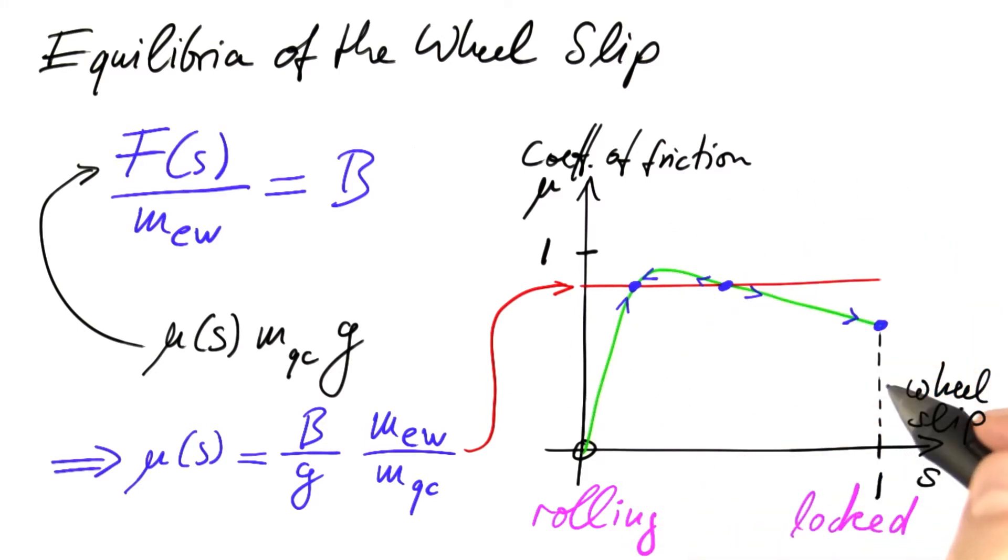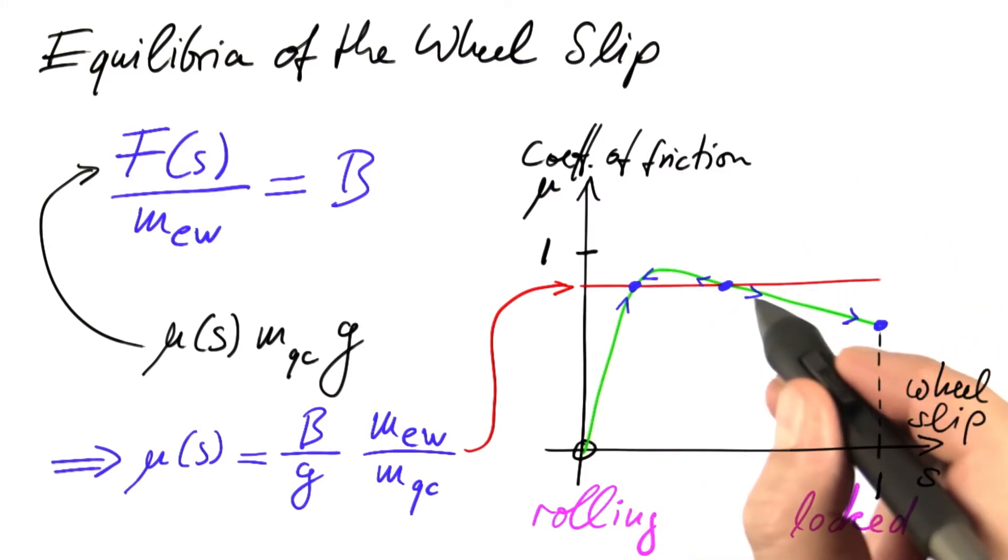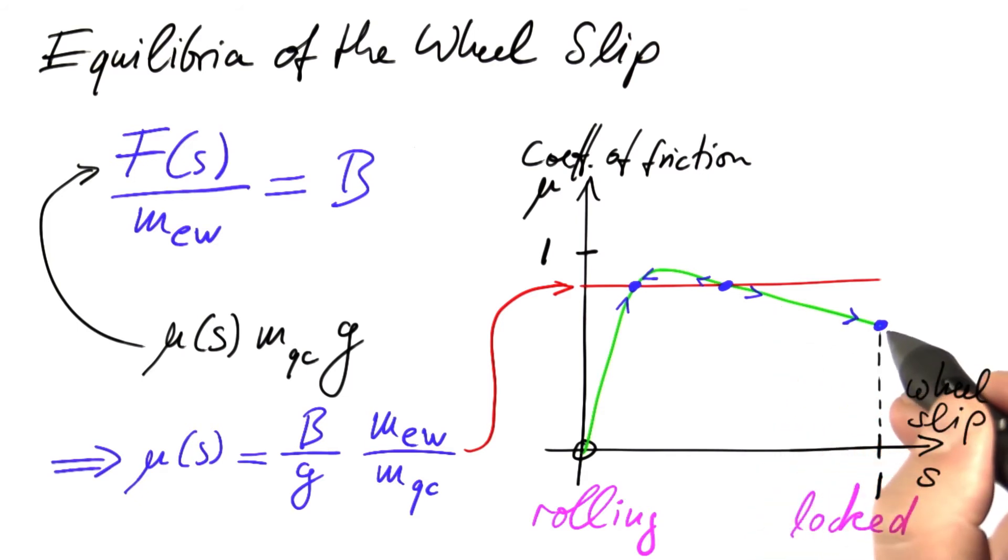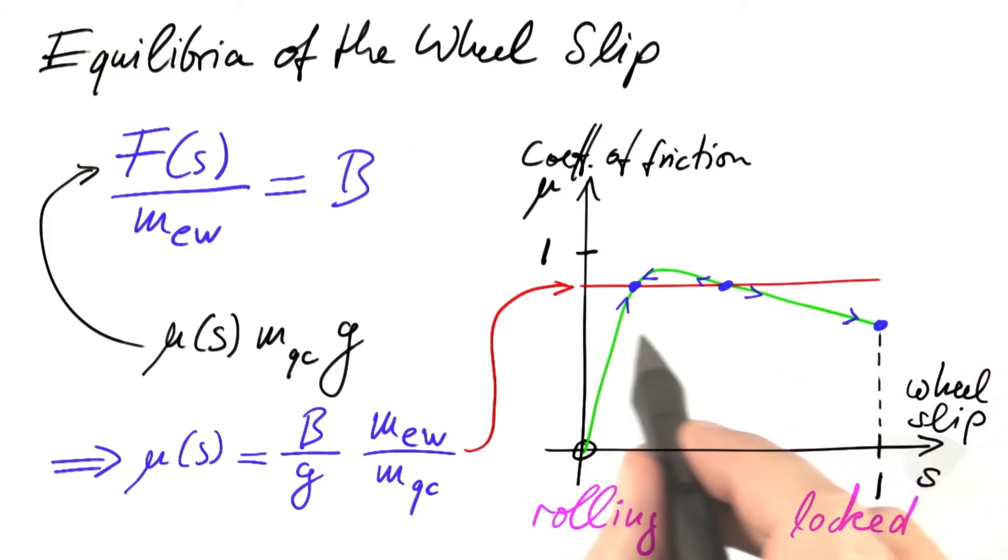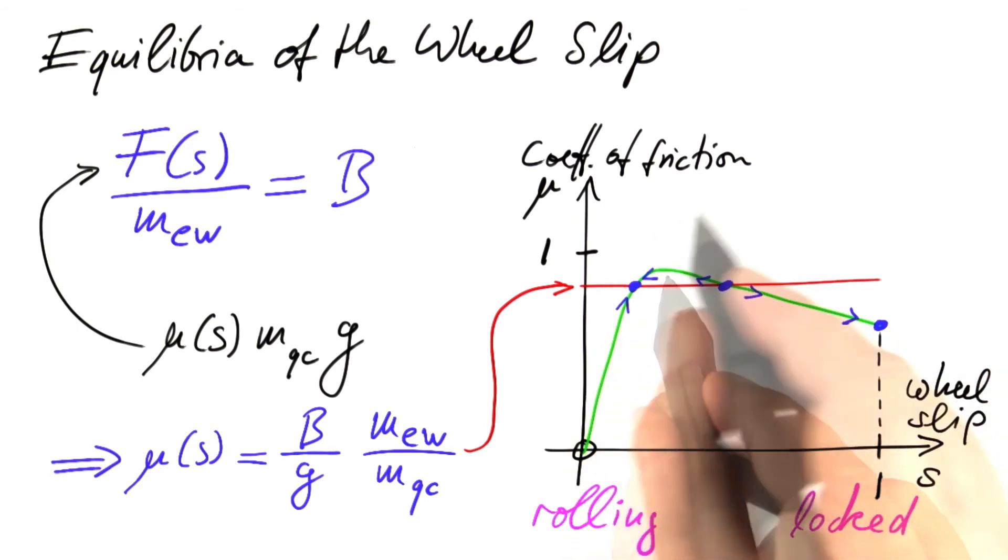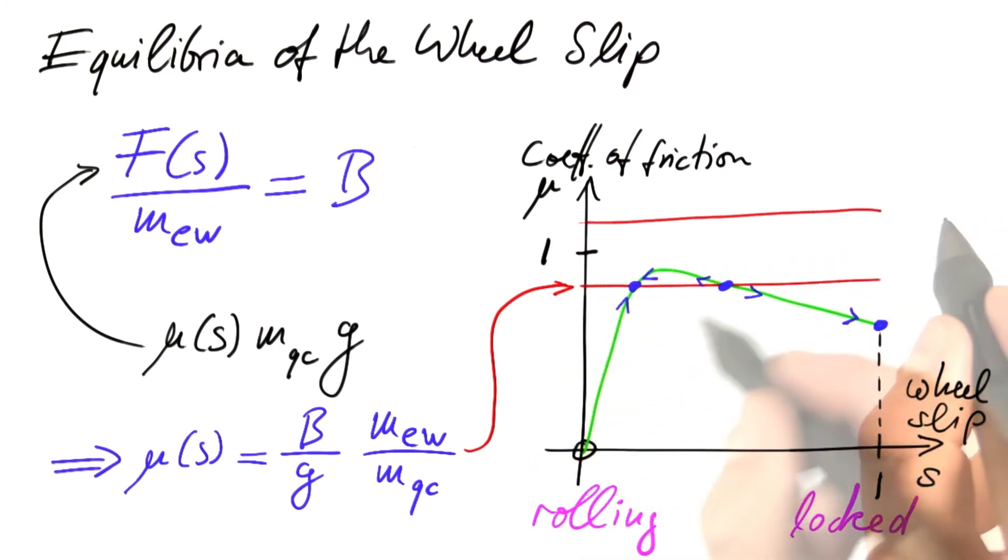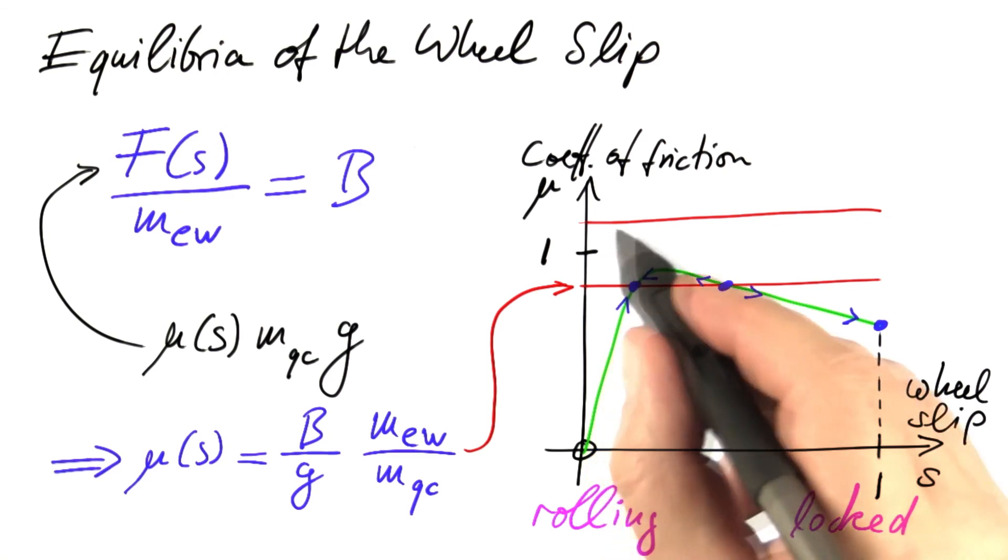There's a practical consequence of this. If you push the brake too hard, you're inevitably going to lock the wheels, which is far less than optimal. If we really stomp on the brakes, there is no equilibrium below s equals one at all. No matter what, we are going to end up with locked wheels.